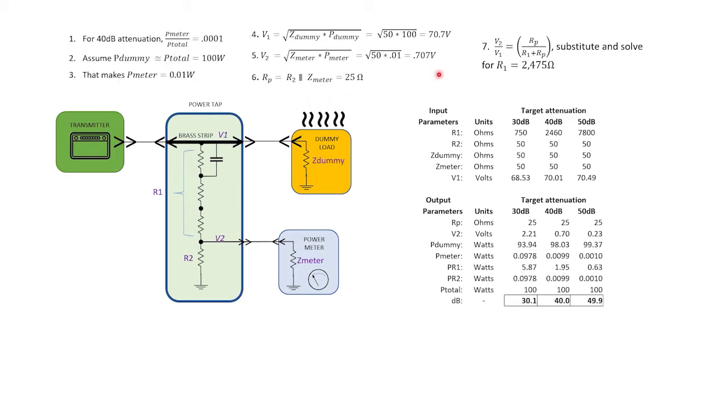The top portion of the screen shows the equations and the right side shows them plugged into an Excel spreadsheet. Just for interest, I've included three values of attenuation. The version I'm building is 40 dB but I'm also showing the resistor values needed for 30 dB and for 50 dB.